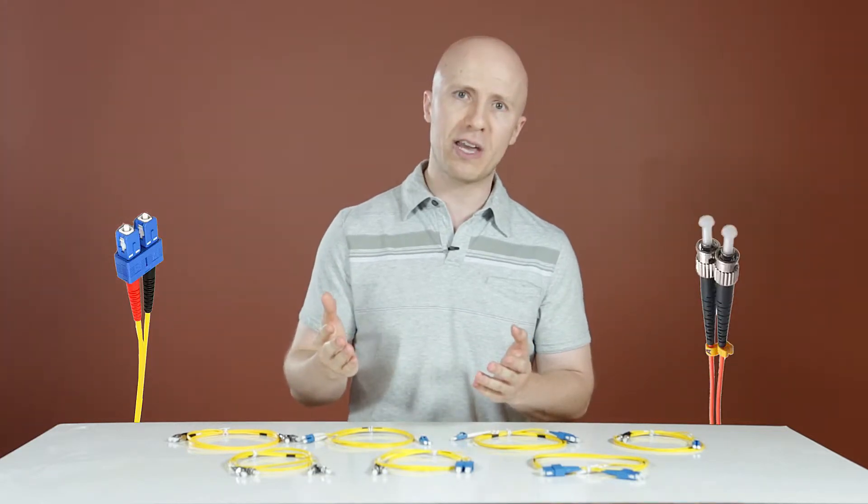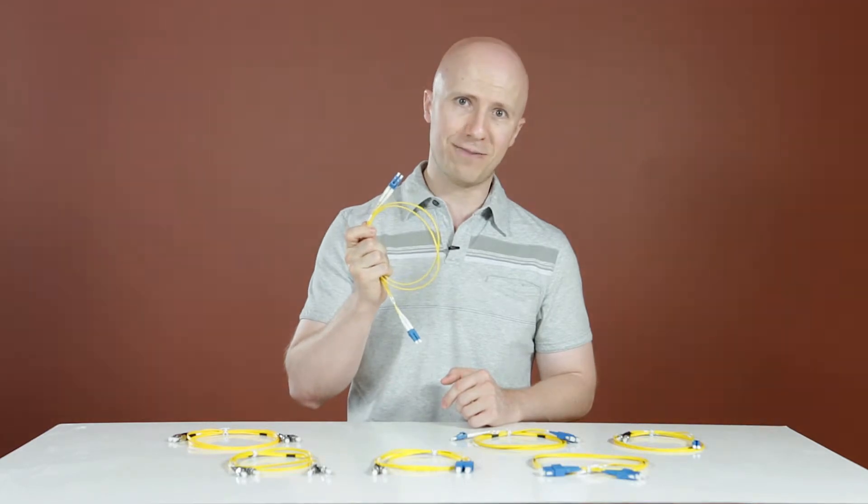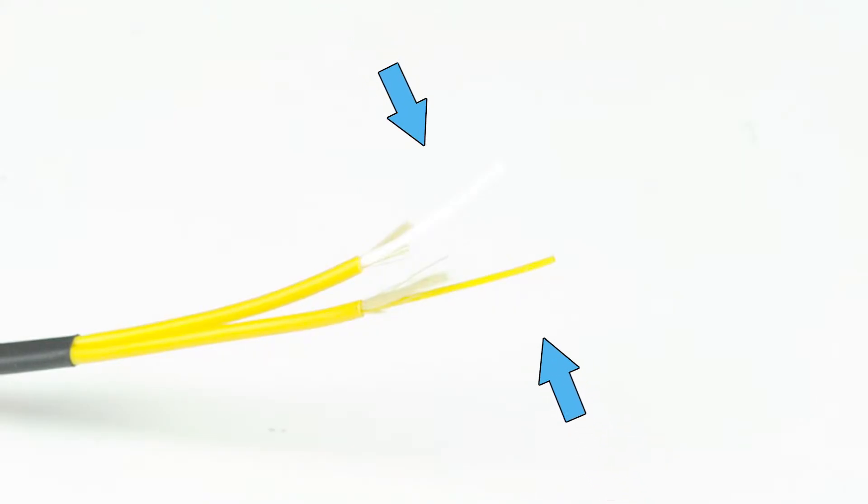They can easily be identified by their yellow jackets. With its small core, single-mode cables are virtually immune to electrical interference. This makes single-mode cables the ideal fiber cable for ISPs and other high-speed carriers that need to provide connectivity over long distances.